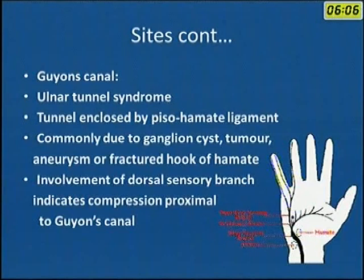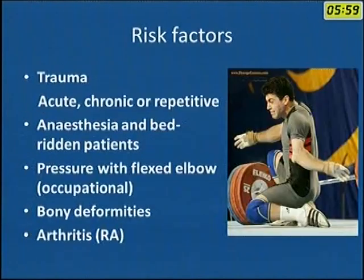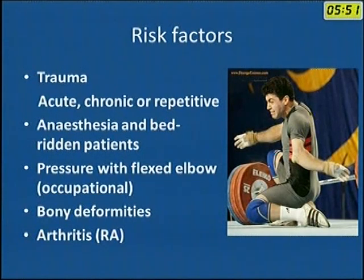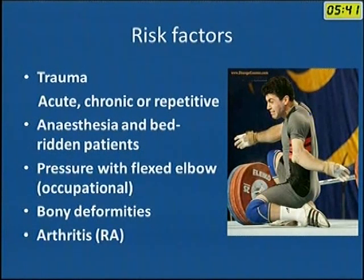Involvement of the dorsal sensory branch indicates compression proximal to Guyon's canal. Risk factors include trauma — for example, weight lifters who sustain severe dislocation can develop ulnar nerve palsy — occupational diseases, bedridden and anaesthetized patients, bony deformities, and rheumatoid arthritis around the elbow joint.